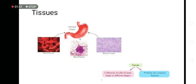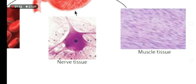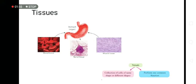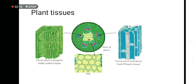There are nerve tissues right here, they are nerve tissues. Then they have muscle tissues. Now tissues can be divided into two parts: collection of cells of same shape or different shapes perform one common function.